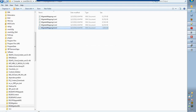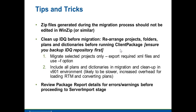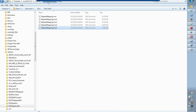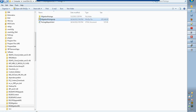The last step of the migration is importing these migrated XML mappings into the 9.0.1 developer. You can use the UI to do it, or use the infacmd object import/export command to import the migratedmappings.xml files. The zip files generated during the migration process should not be edited — you should not touch the .zip file packaged as part of the client package process.